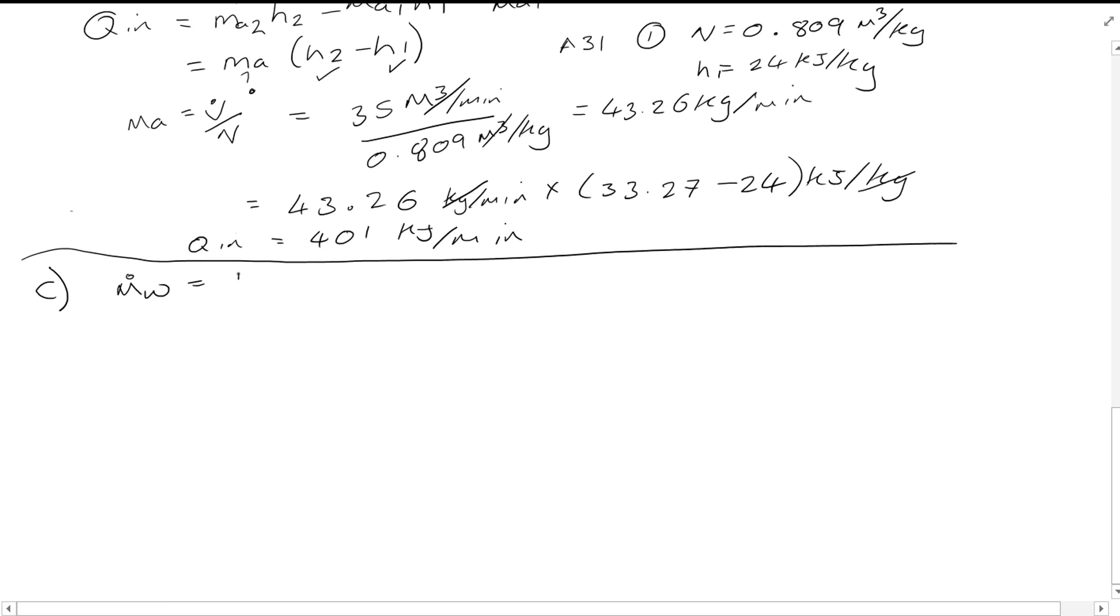So Mw equals the total mass of water vapor added, and Mw is equal to Ma times omega 3 minus omega 2. We've already previously calculated all of these values, giving the answer of 0.149 kg per minute. Of course if you need the value in seconds just divide by 60.